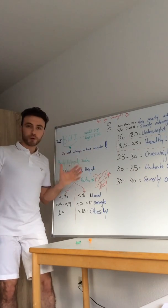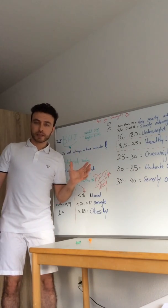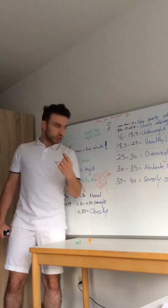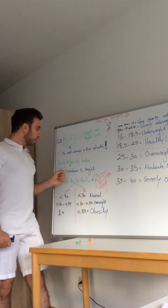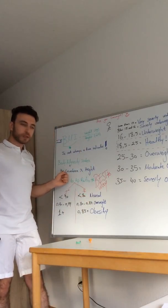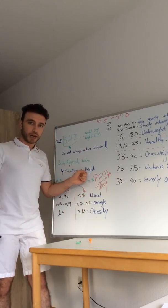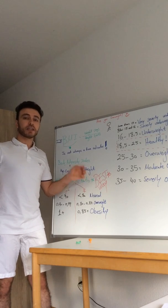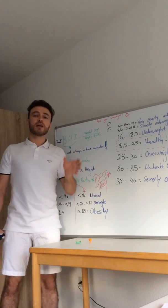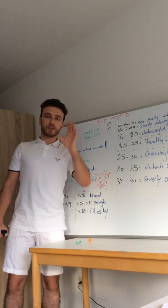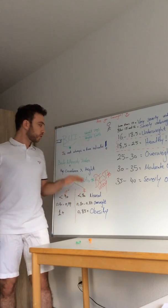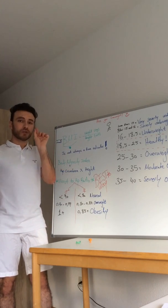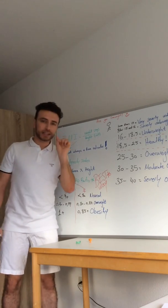Go to the body adiposity index. If you have a tape measure, calculate your hip circumference and multiply it by height, and you will find some definite numbers to calculate your body adipose, or fat.